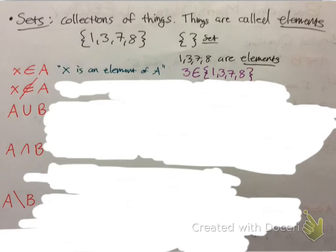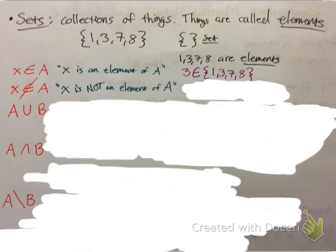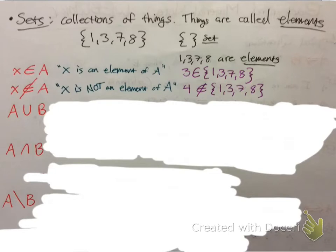Now if you have the same symbol but with a line through it, x is not an element of a. So another example: if you had 4 in the same set, 4 is not an element of the set — it just means that it's not present in that data set.